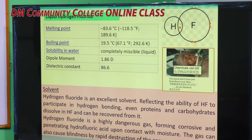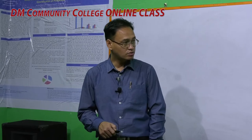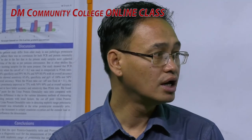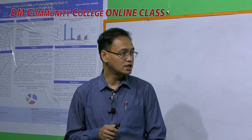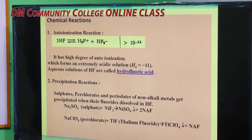Even proteins and carbohydrates dissolve in hydrogen fluoride and can be recovered from it. However, hydrogen fluoride is highly dangerous, forming corrosive and penetrating hydrofluoric acid upon contact with moisture. Hydrofluoric acid is the aqueous solution of HF. HF gas can also cause blindness by rapid destruction of the corneas. The most important reaction of HF is auto-ionization: three molecules of HF dissociate into fluoronium ion and hydrogen difluoride ion (HF2−). Its ionic product is 10^−14, indicating a high degree of auto-ionization.